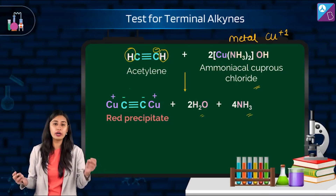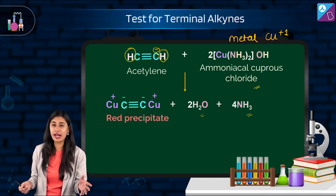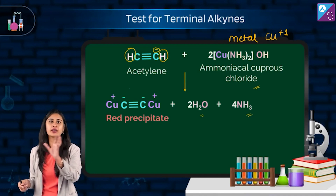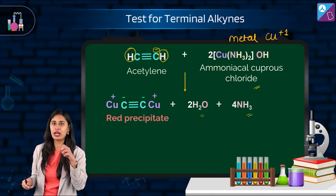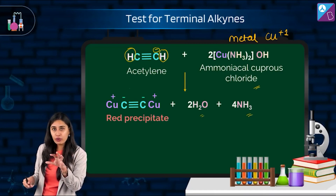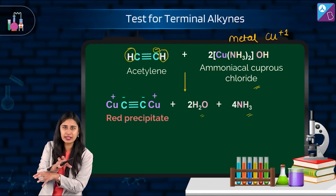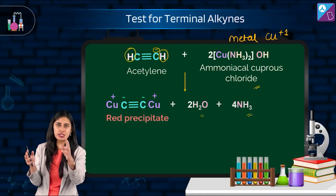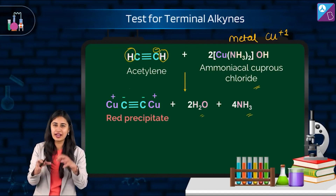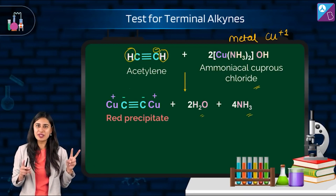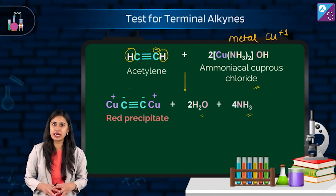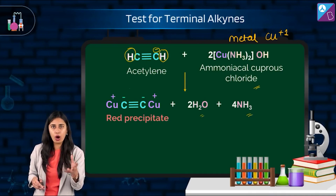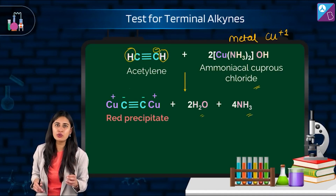Anywhere you can distinguish something with the naked eye, it becomes a test — just like the test for unsaturation, where the reddish-orange color of bromine in carbon tetrachloride gets decolorized. Here, we are testing for the acidic hydrogen: if silver (Ag) sits in place of the acidic hydrogen, we get a white precipitate; if copper (Cu) sits there, we get a red precipitate. Both are observable with the naked eye.